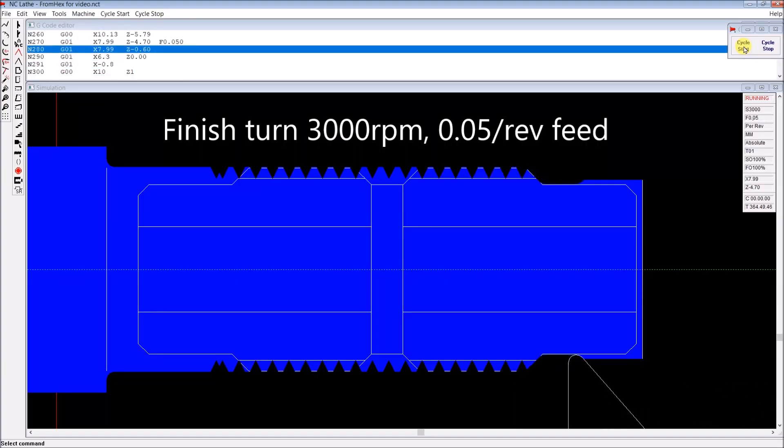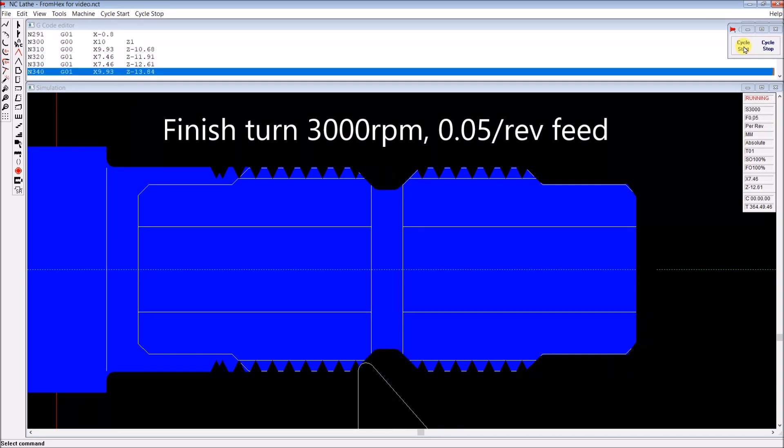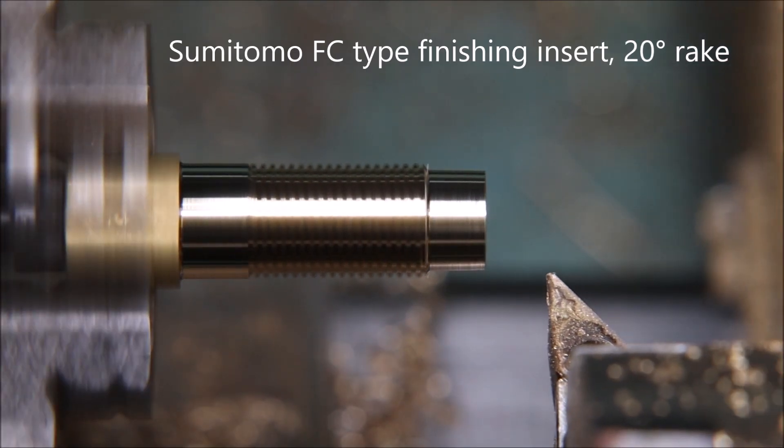That tool nose radius that you can see is one advantage that the Windows software has over the DOS software. It lets me actually see the tool path that I've created has worked properly.